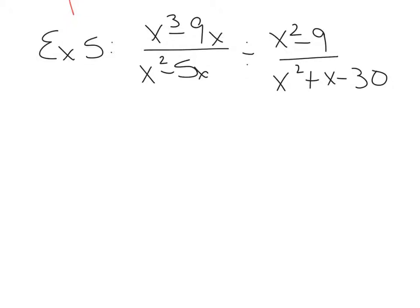Starting with example 5, we now have divide instead of multiply. So x cubed minus 9x over x squared minus 5x, divided by x squared minus 9 over x squared plus x minus 30. If you remember your rules for dividing fractions — keep it, change it, flip it — you're going to keep the same fraction, change this to multiply, and then flip the second fraction.